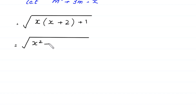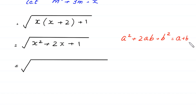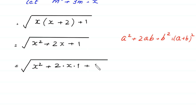Next, we expand x times (x plus 2): x times x is x squared, and x times 2 is 2x, plus 1. We recognize this can be written as x squared plus 2 times x times 1 plus 1 squared using the algebraic identity a squared plus 2ab plus b squared equals (a plus b) squared.